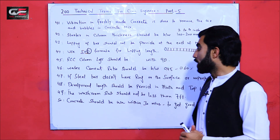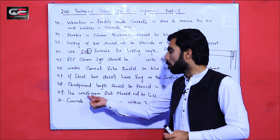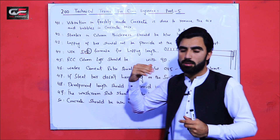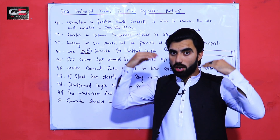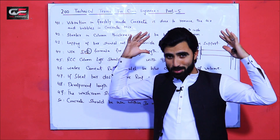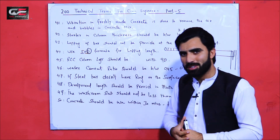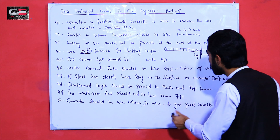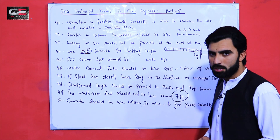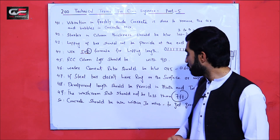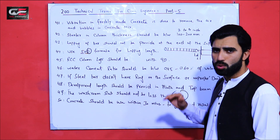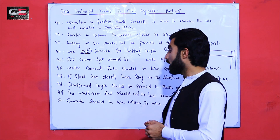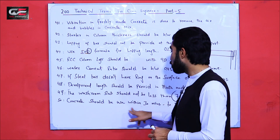Term number 49: the washroom ceiling height should not be less than seven feet; otherwise you will face problems when bathing. If the height is less than seven feet you will feel something is wrong. Therefore the minimum height of a washroom must be seven feet — you should not decrease the height below seven feet.